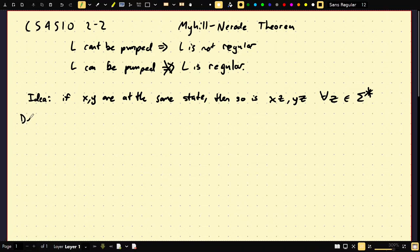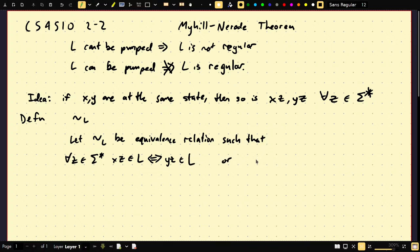Okay, so now I'm going to define this equivalence relation, so I say let tilde of L be the equivalence relation such that, I'm going to write it like this, X tilde L Y for all Z in sigma star, XZ is in L if and only if YZ is in L, or, and these are equivalent, but I prefer to write it this way as well, just to make things clear later on, both XZ is in L if and only if YZ is in L.